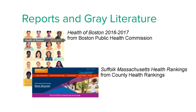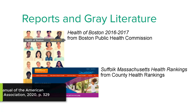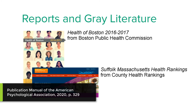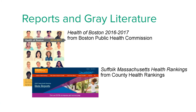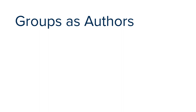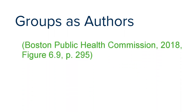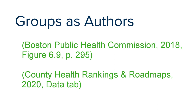Now, we will cite reports and gray literature from the Boston Public Health Commission and county health rankings and roadmaps. There are a number of reports such as government reports, technical reports, and research reports. Gray literature includes documents such as press releases, codes of ethics, grants, policy briefs, and similar publications. You might not see authors listed in reports or gray literature the same way you do in a journal article. Often, groups or organizations represent their professional documents so you can cite them as the author. The in-text citations will look a little different, but that is okay because it's still based on the author-date system.